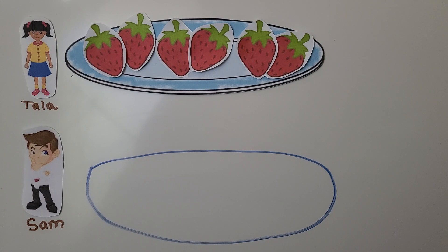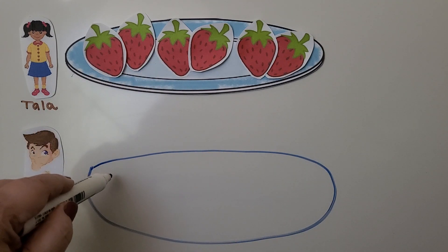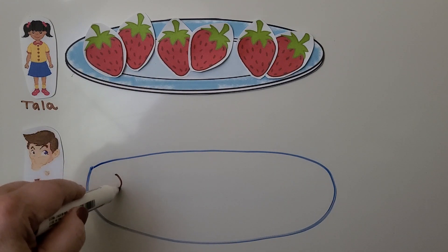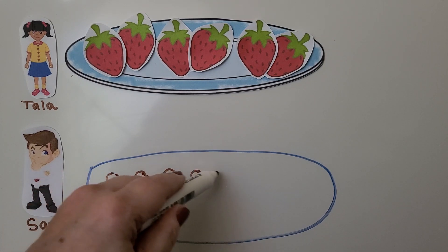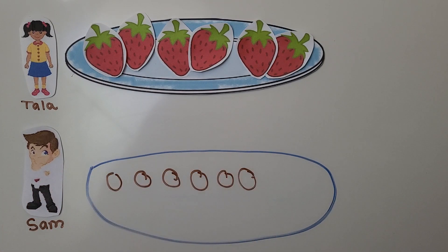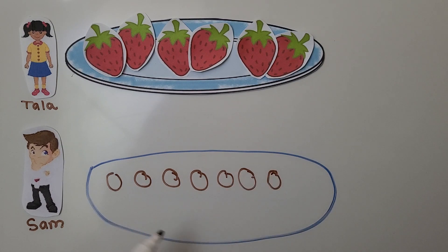We can draw a quick picture using a circle for each strawberry. She has six, so we draw a matching number: one, two, three, four, five, six. And we need one more because Sam has one greater than six, so we draw one more circle for a strawberry.